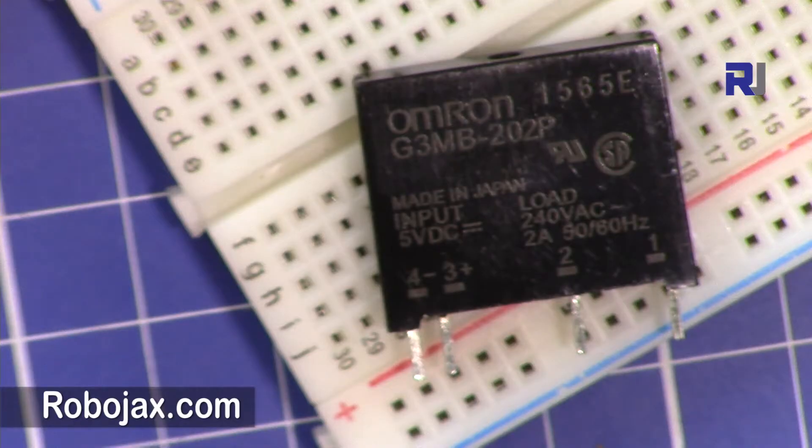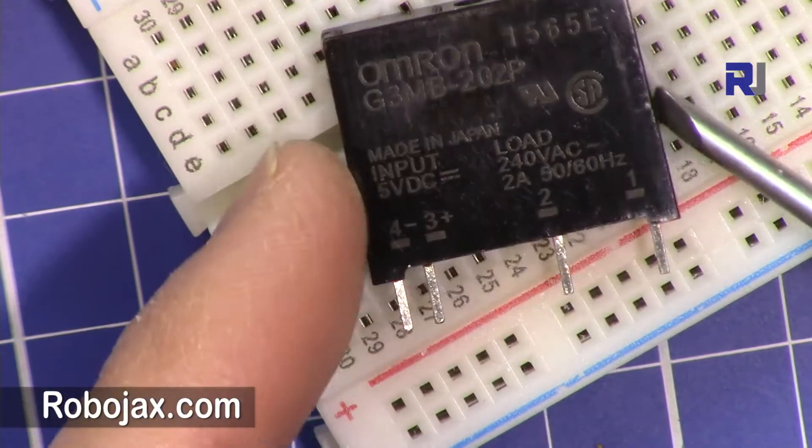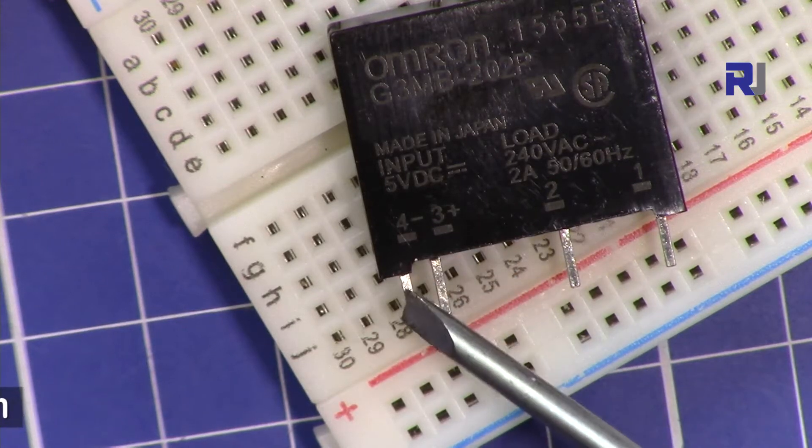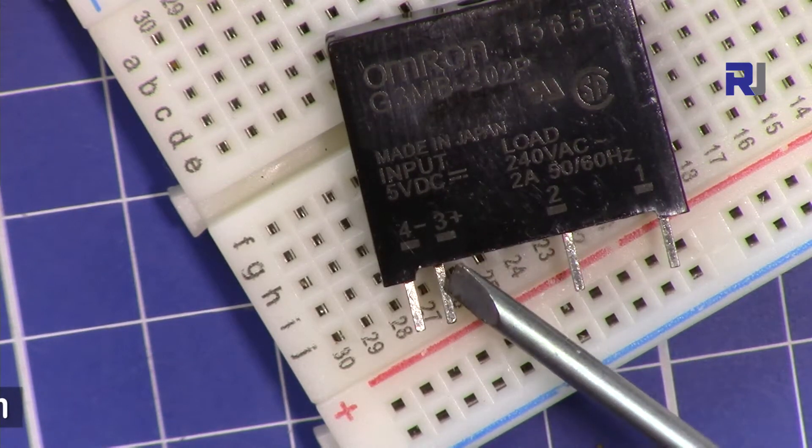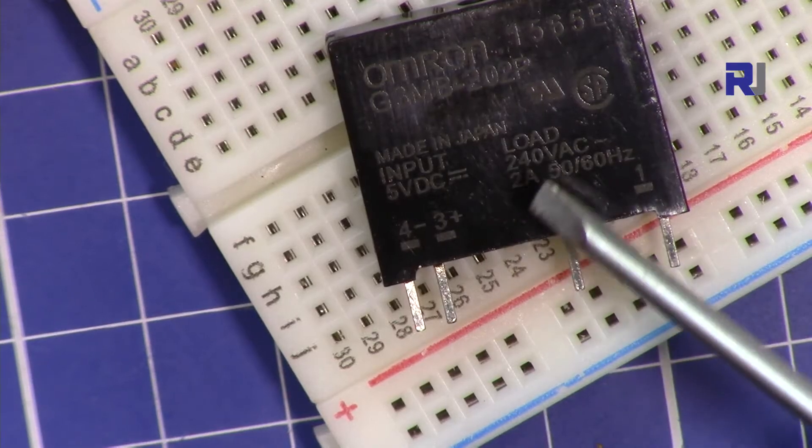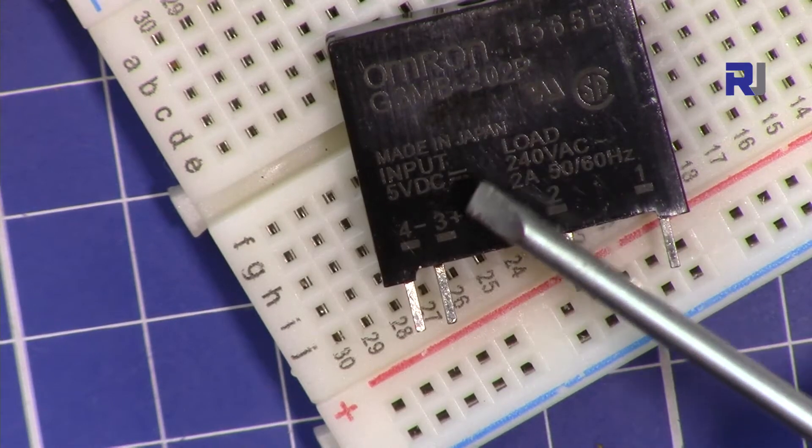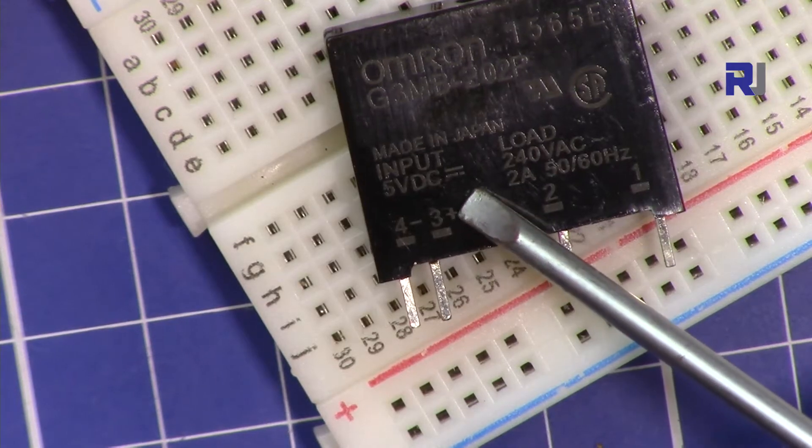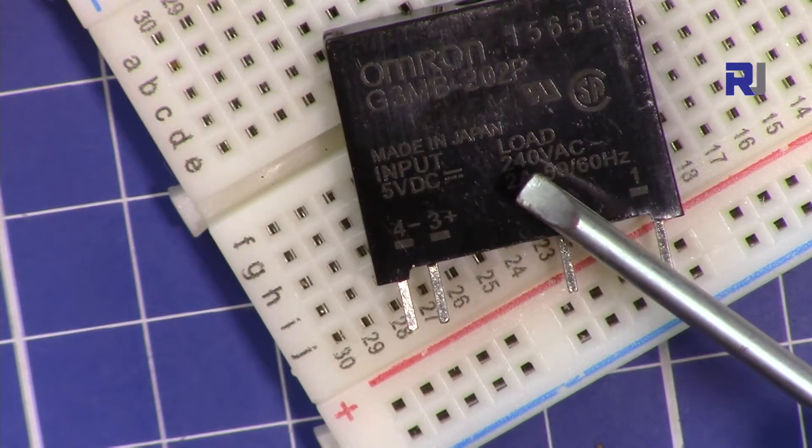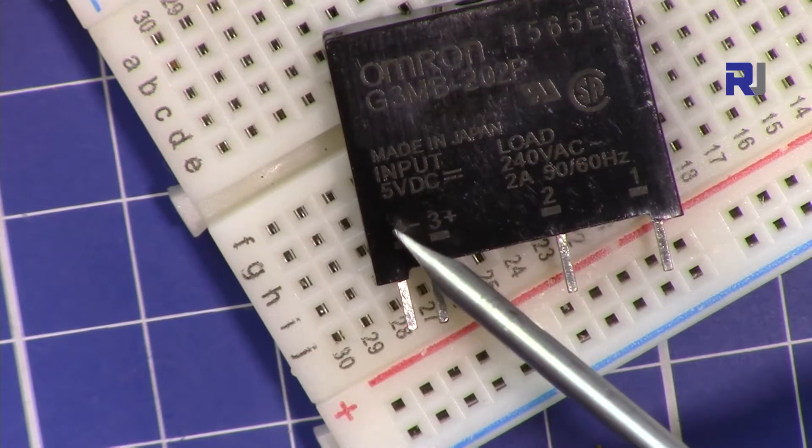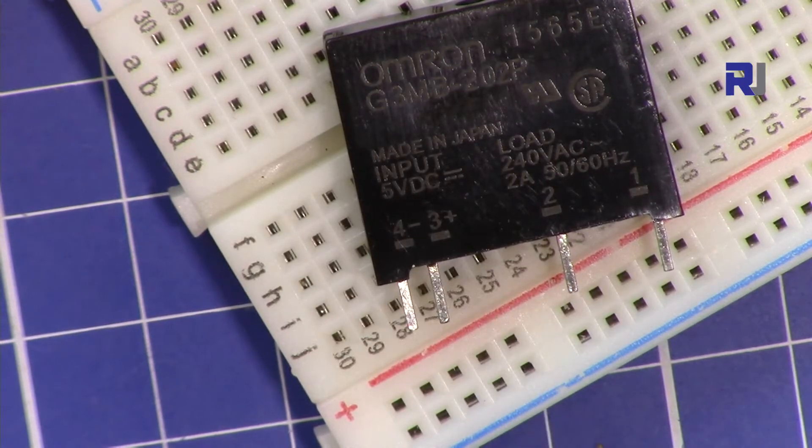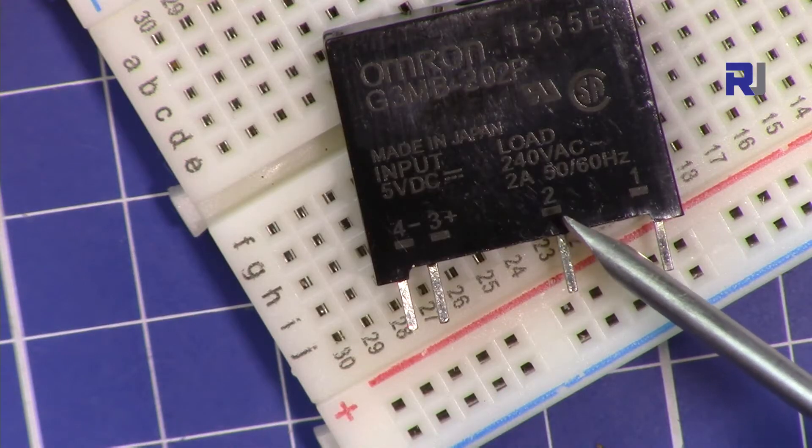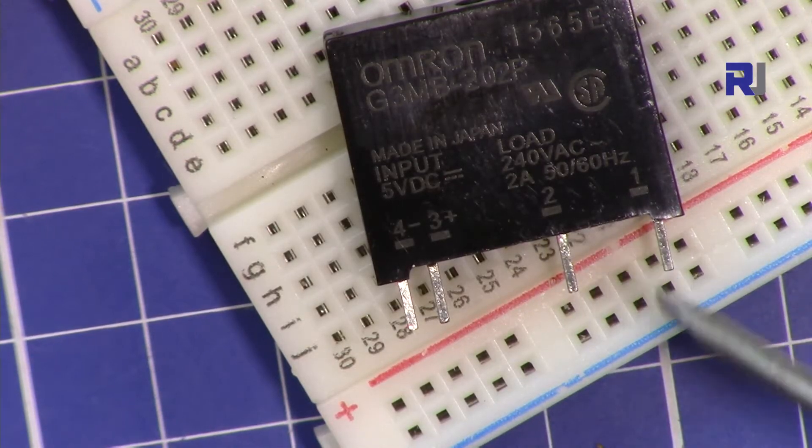On this module we have four pins. From this side it's 1, 2, 3, 4. The negative will be connected here and positive will be connected here. These modules are offered in three different types with five volts and other voltages. I'm using the five volts because it's compatible with Arduino. We'll connect the negative here, the positive here. The two wires for the AC load will be connected here, which I'm going to show you next.